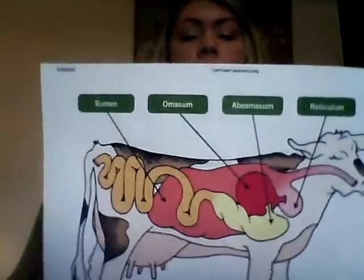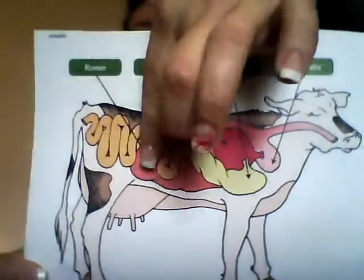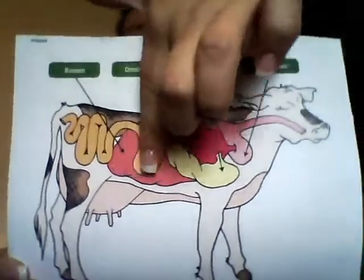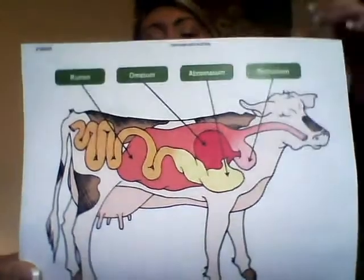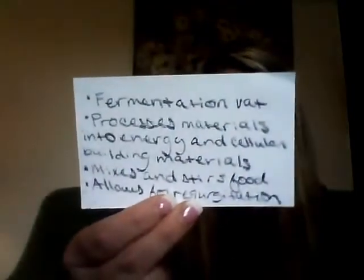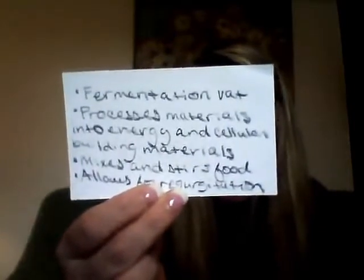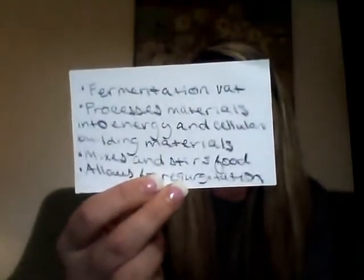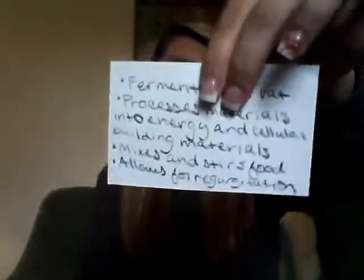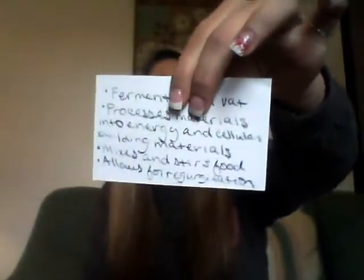Then we have the rumen of the ruminant stomach, which is the largest part of the stomach — this darker pink area here. The rumen serves as a fermentation vat that processes materials into energy and cellular building materials. It also mixes and stirs the food, and allows for regurgitation and eructation, which means burping.